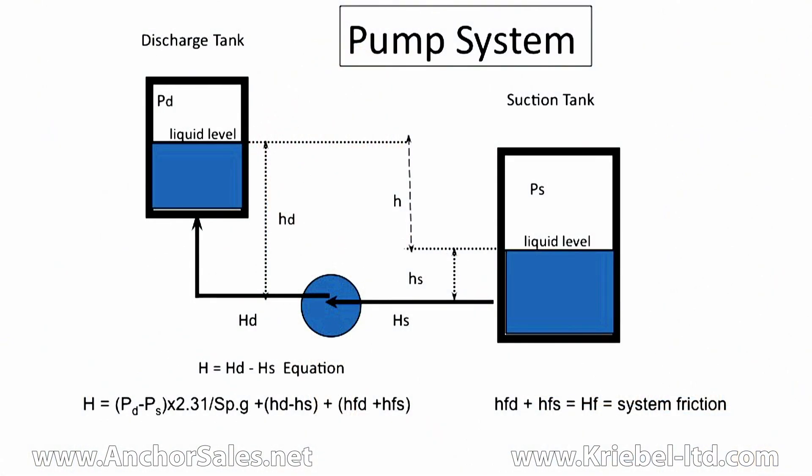The flow rate is in gallons per minute of the liquid you're pumping. The pressure heads are determined from three components. The pressure head is the difference in pressure between the two vessels, as seen on this sketch. The suction vessel pressure is subtracted from the discharge pressure to become the differential pressure. You multiply that by 2.31 divided by the specific gravity, and that's your pressure head in feet of liquid.